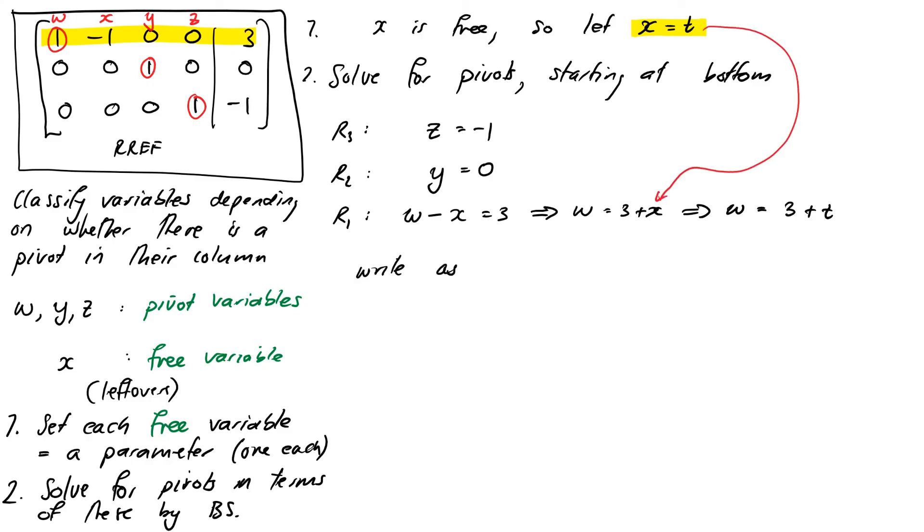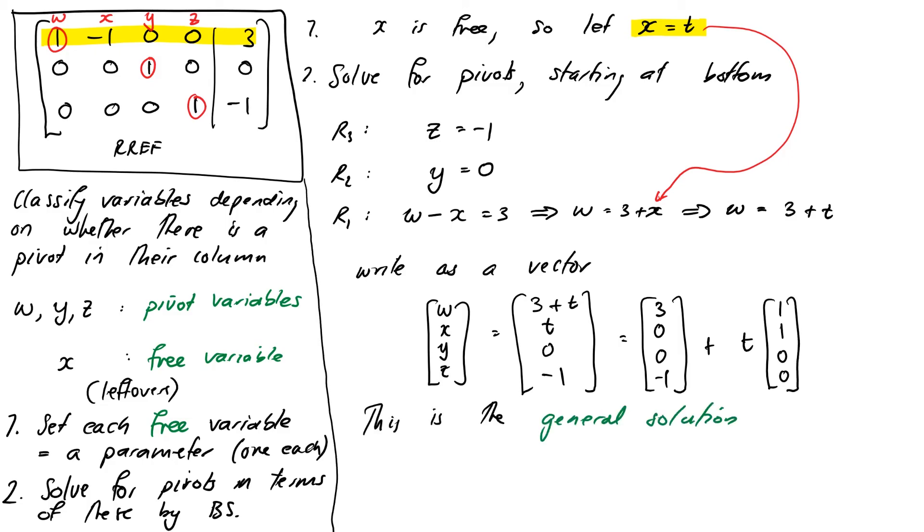So now we have an expression for all four variables. We just write it down as a vector. So W, X, Y, Z, are 3 plus T. Don't forget X is T. We actually specified that one up front. So X is T. Y is 0 and Z is -1. And just as we did for our equations of lines parametrically, we split this up into a constant portion and a parameter portion. So it's going to be (3, 0, 0, -1). That's our constant. Plus T times (1, 1, 0, 0). This is the general solution to this system of equations. And so we can see that because there are infinitely many possible choices for T, this example corresponds to a system that has infinitely many solutions. So when we end up with free variables, that's when we get infinitely many solutions to our problem.